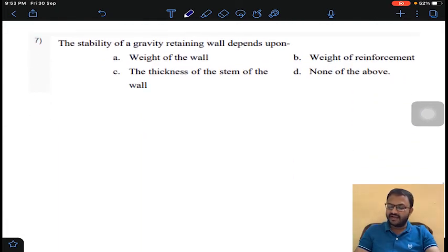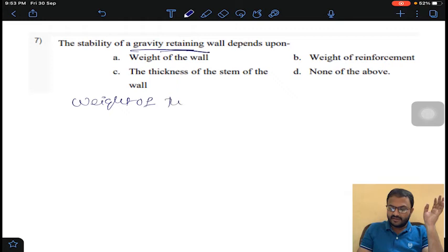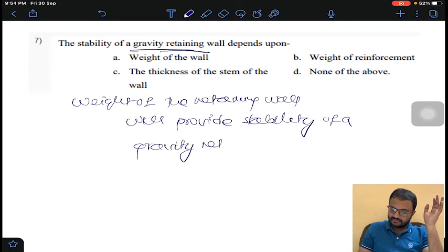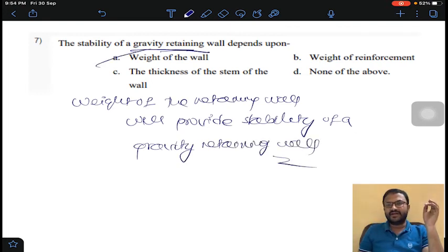Coming to question number 7, it's a theory question. The stability of gravity retaining wall - gravity retaining wall stability can be taken by the weight of the retaining wall. Answer A for question number 7.